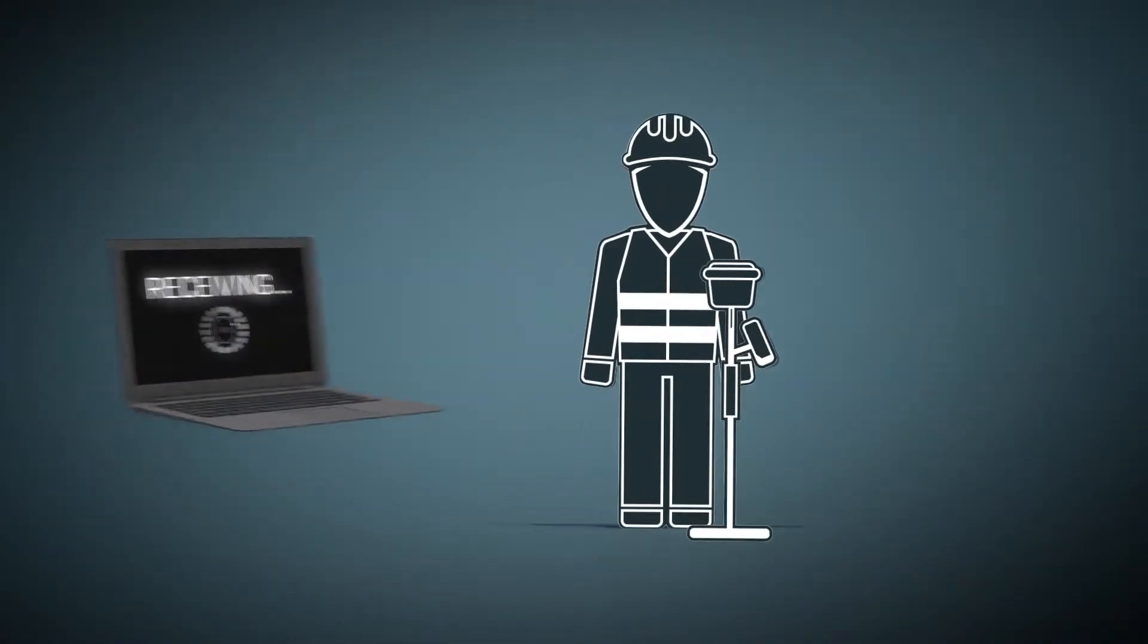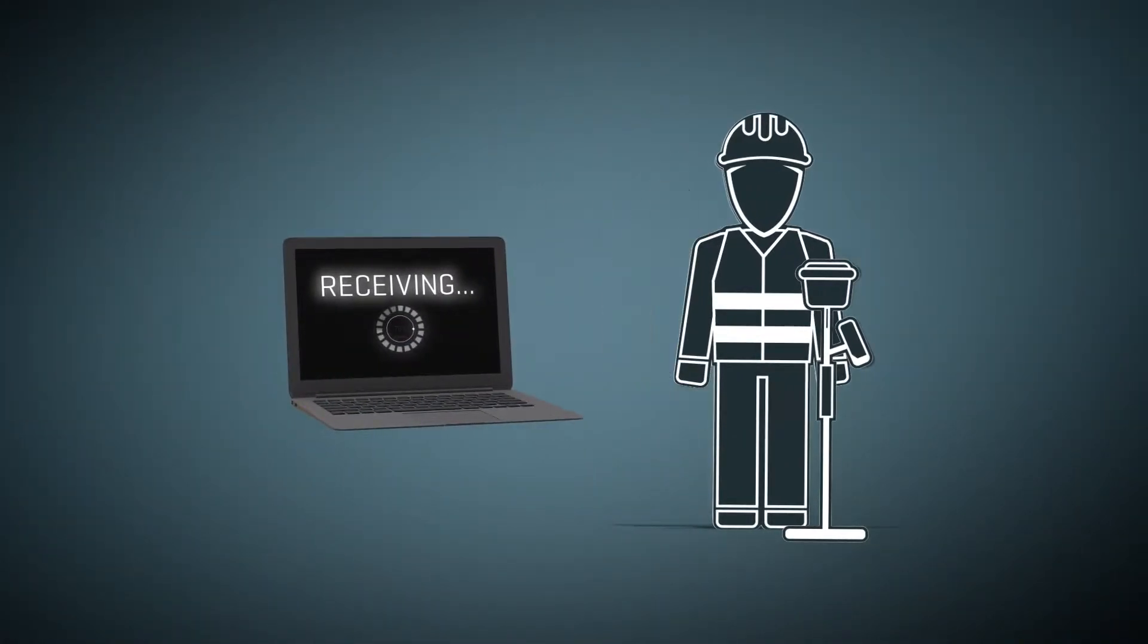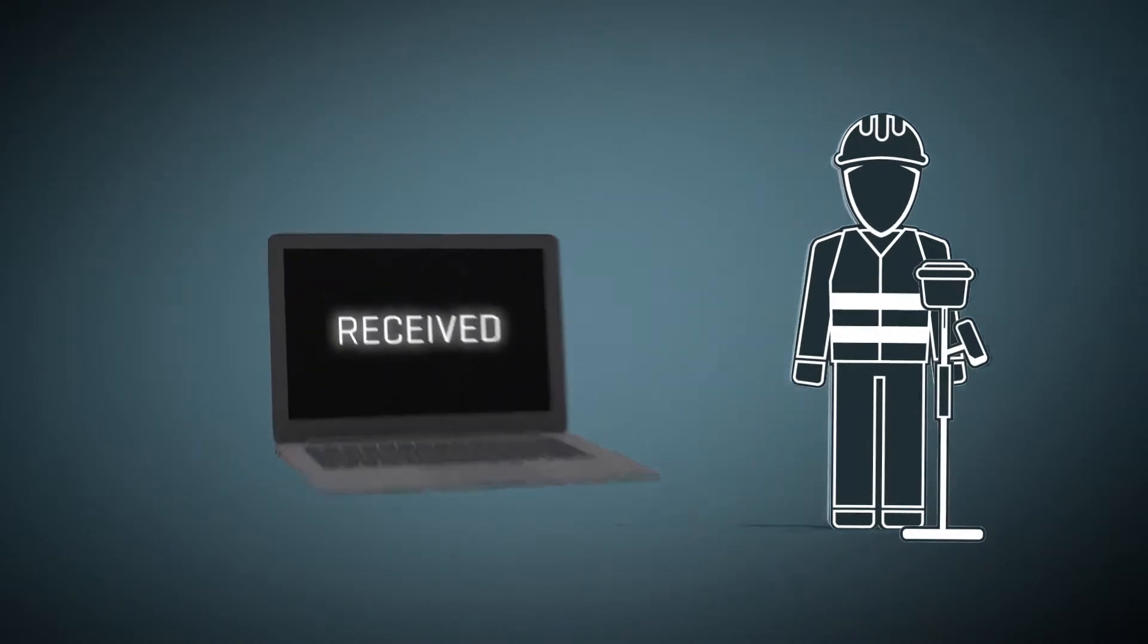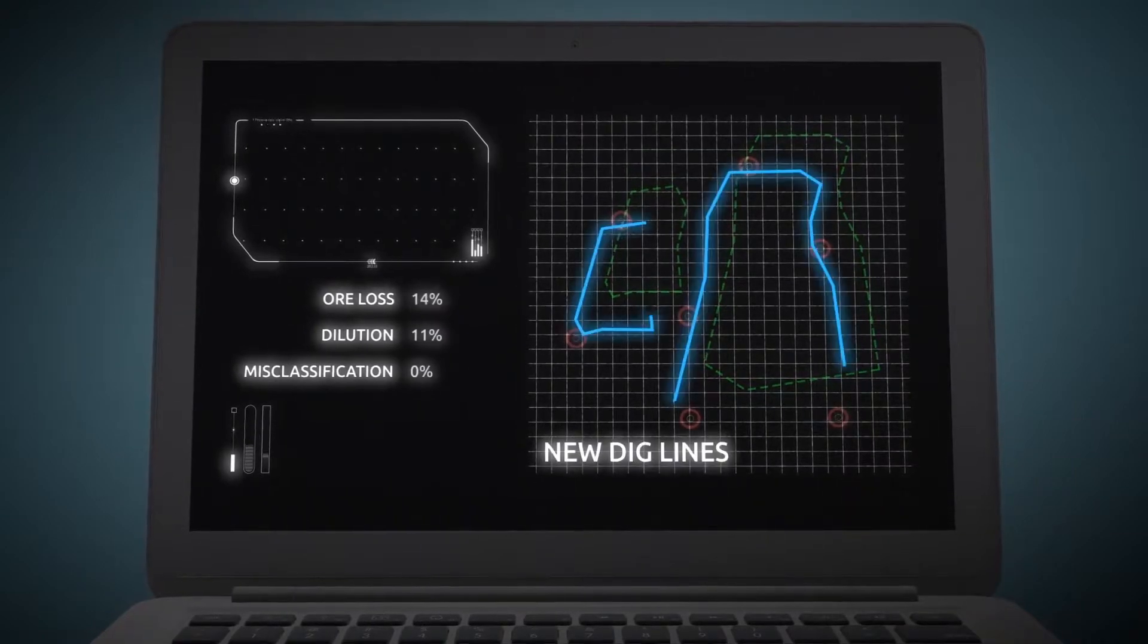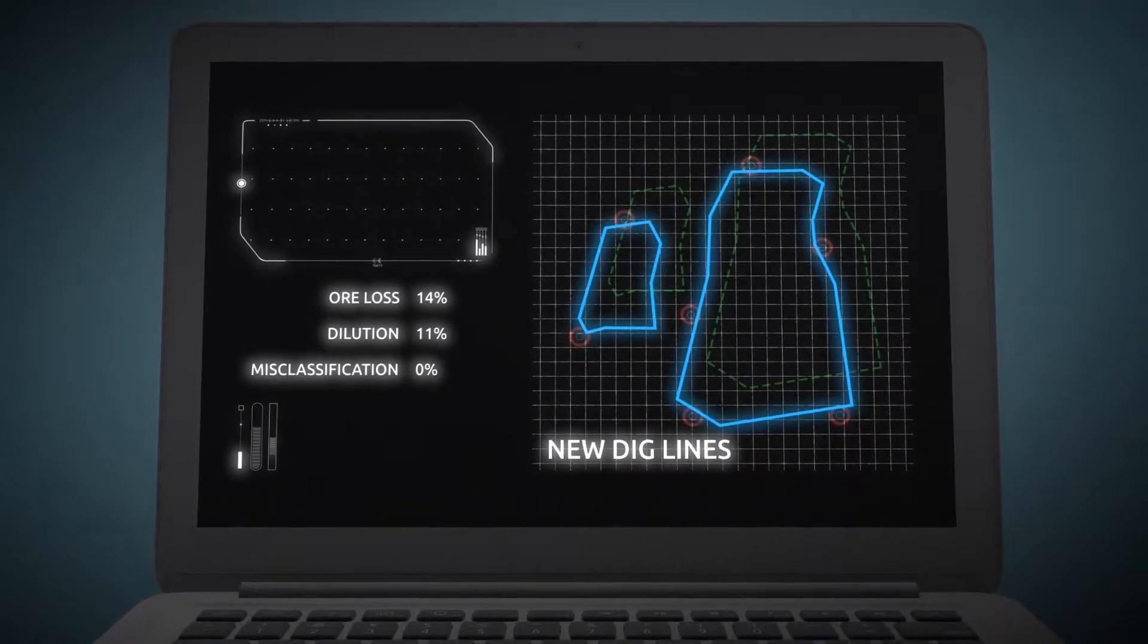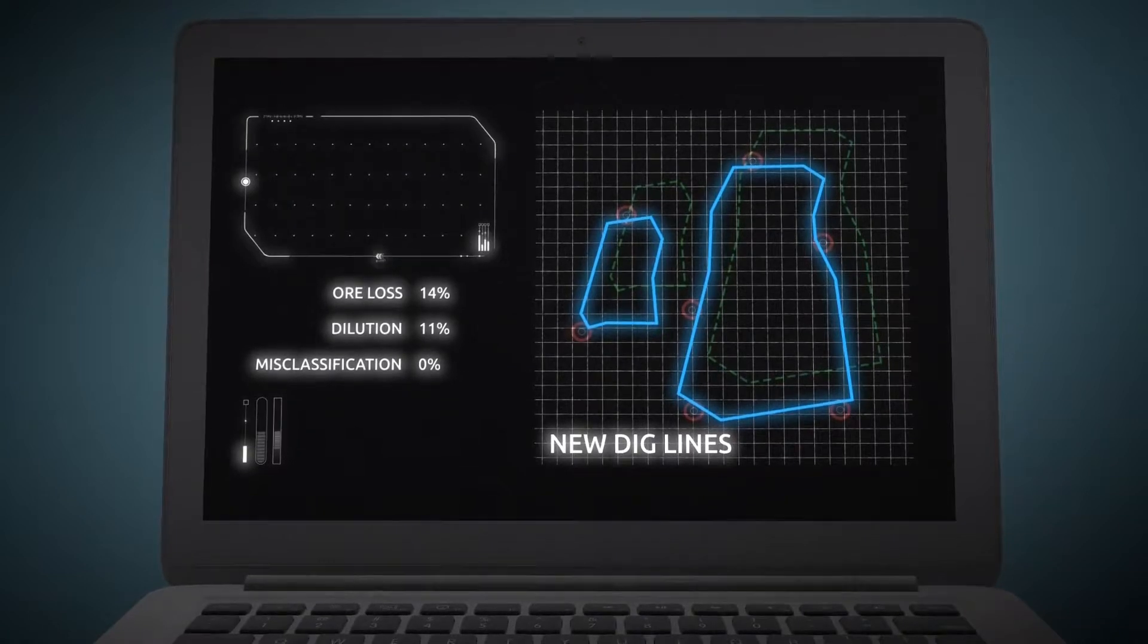The BMM location data can be sent wirelessly to the BMM Explorer software via the mine network. This data is then utilized to create the new post-blast dig polygon and translated into new dig lines that take into account the post-blast ore movement.